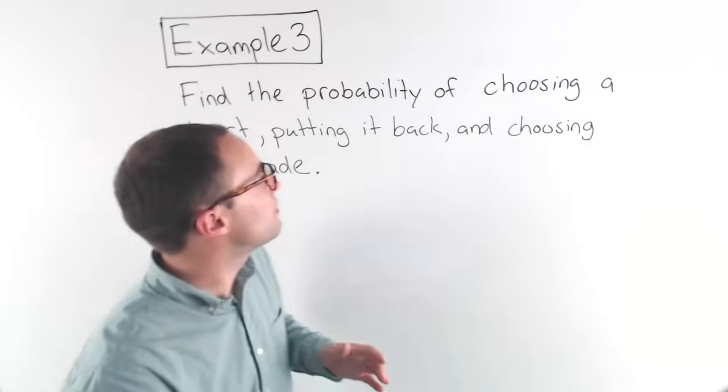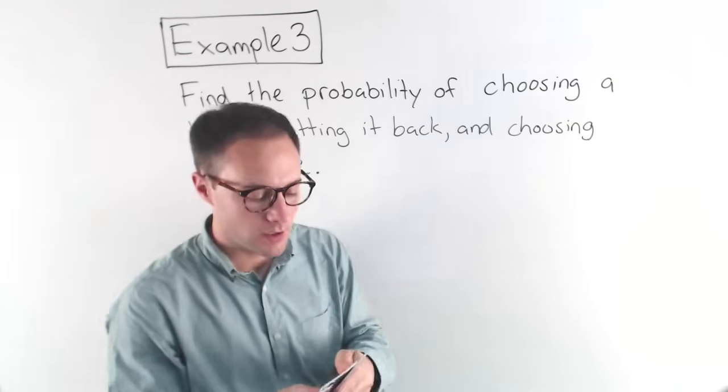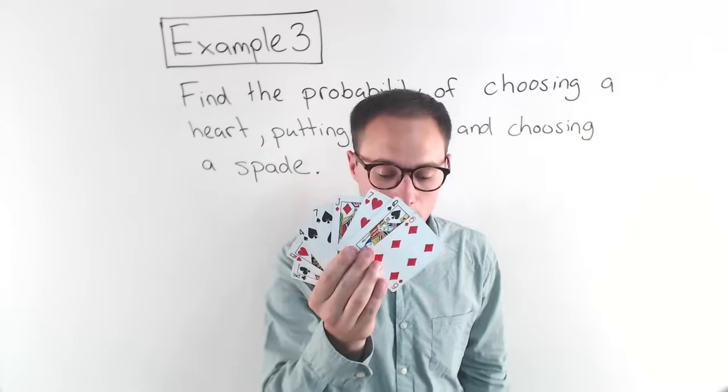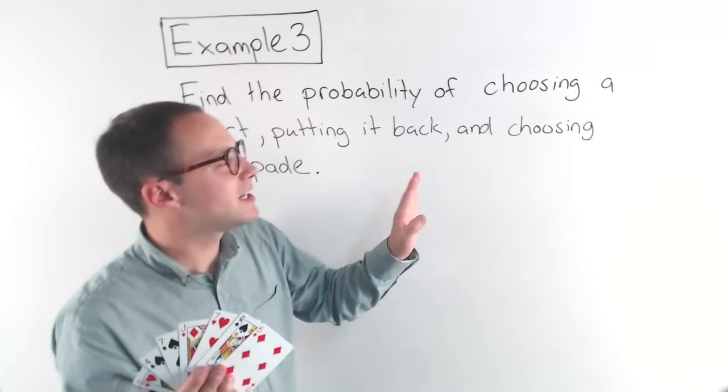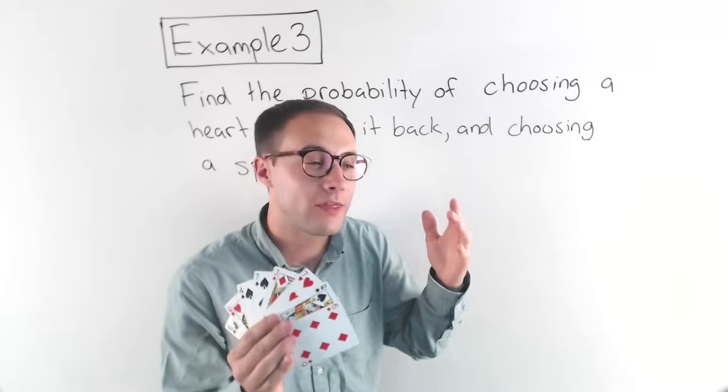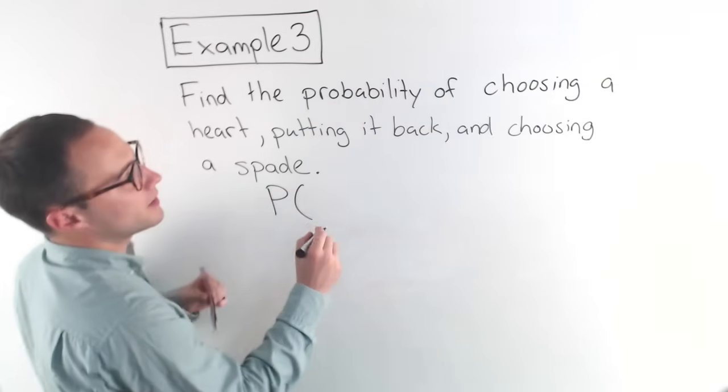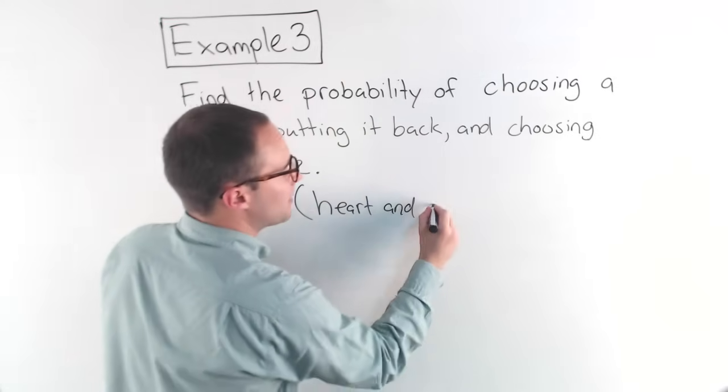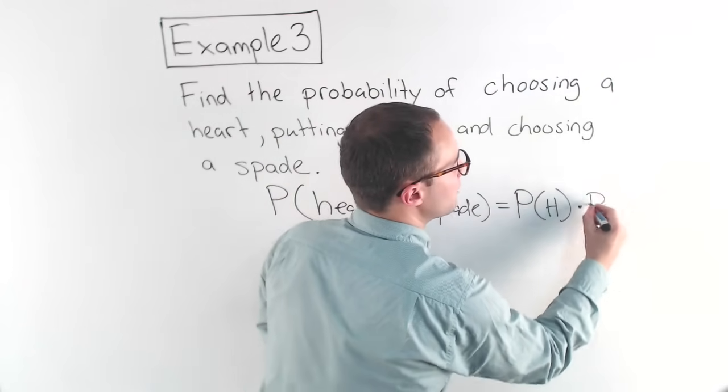Okay, here's the last example. Example three. Find the probability of choosing a heart, putting it back, and then choosing a spade. So here are my cards, right? If you count them all up, you should notice there are eight. Now, we got to think first, is this going to be dependent or independent? The key phrase here is that we put it back after we do the first, after we choose the first card. So that should tell you, things aren't changing. It's going to be independent. The probability of choosing a heart, putting it back, and then choosing a spade. So heart and spade. That's just going to be probability of the heart times probability of the spade.